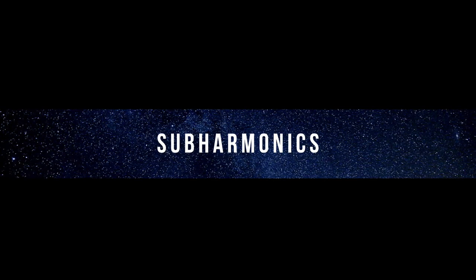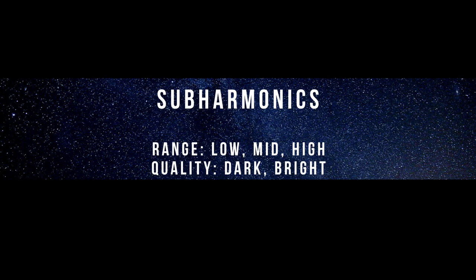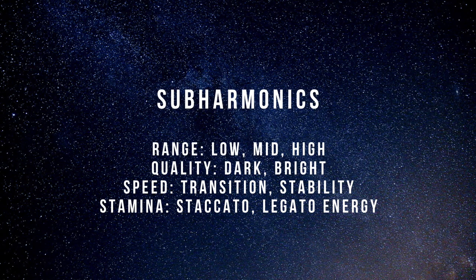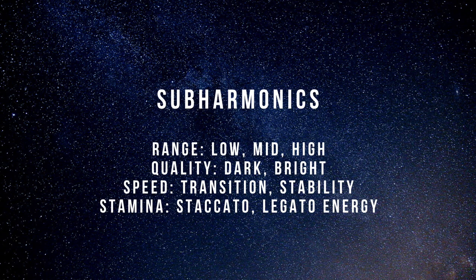When developing subharmonics, there are four things I'd like to take a look at: our range, whether it's low, mid, or high; the quality of the subharmonic, is it dark, bright, or a combination of the two; the speed, whether it's our transition stability; as well as the stamina. In order to develop stamina, of course, we focus on staccato and legato energy to help us sustain that line as well as break up the line.